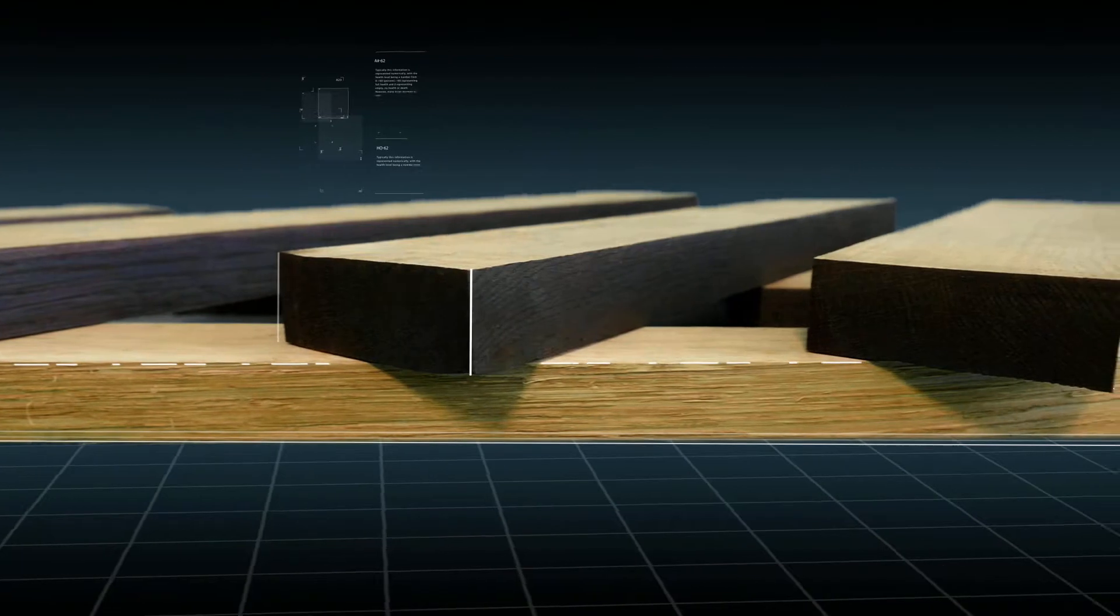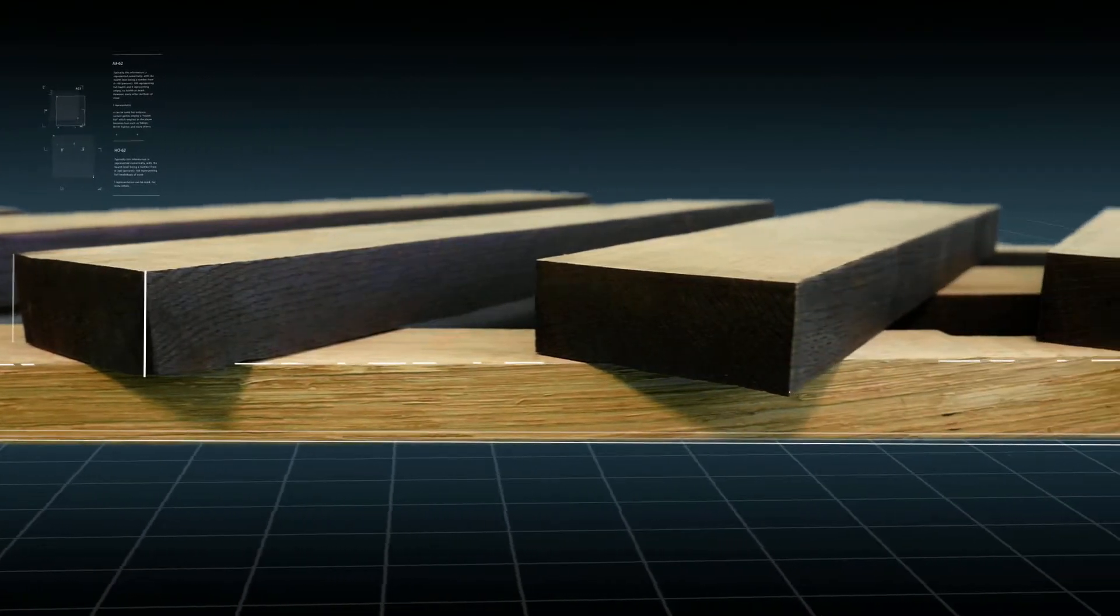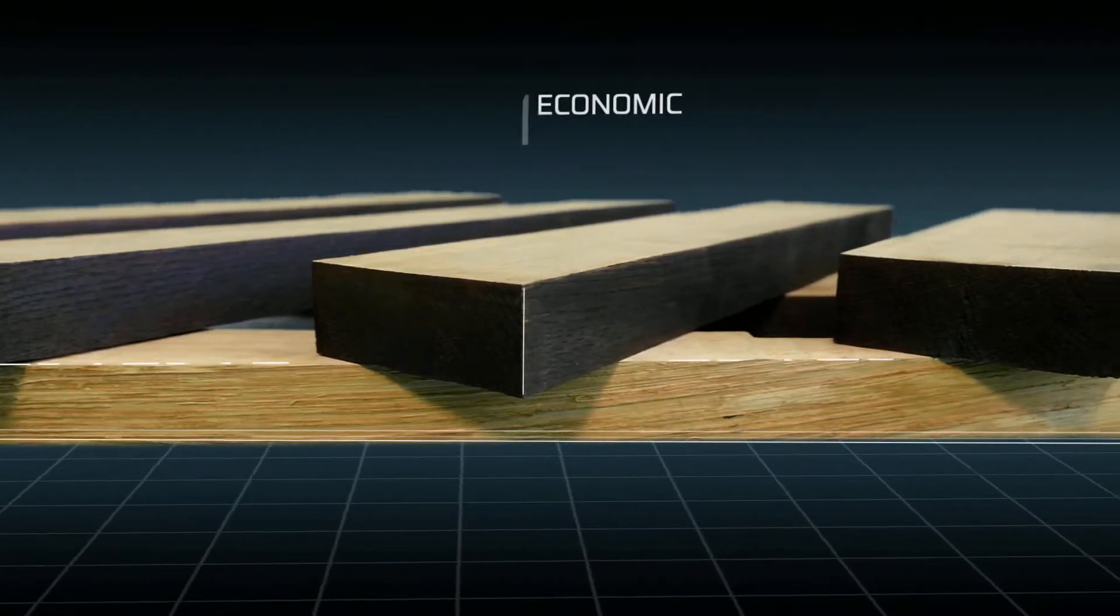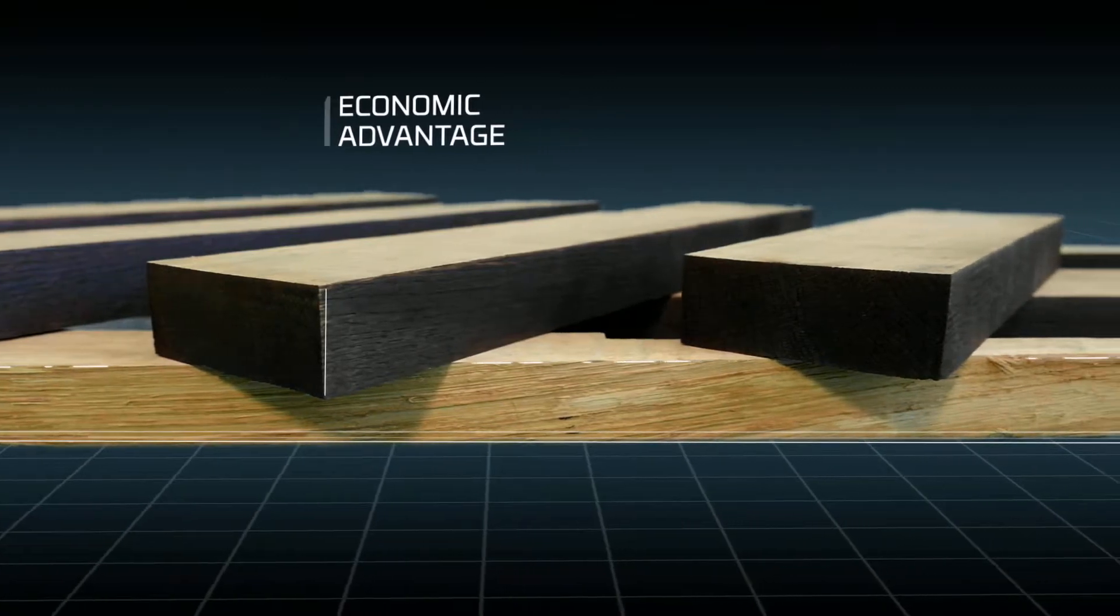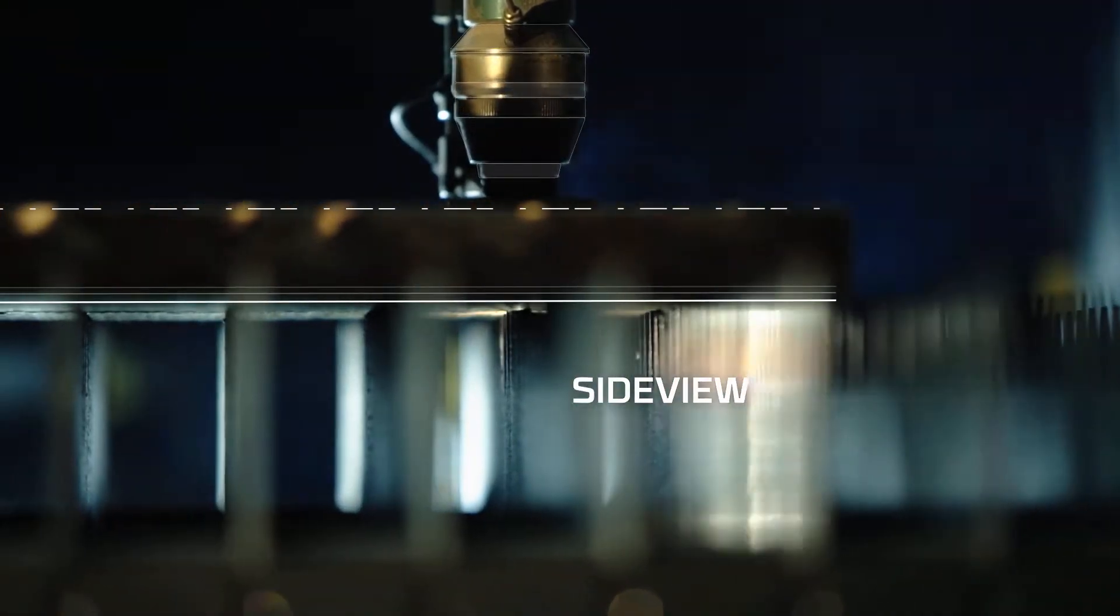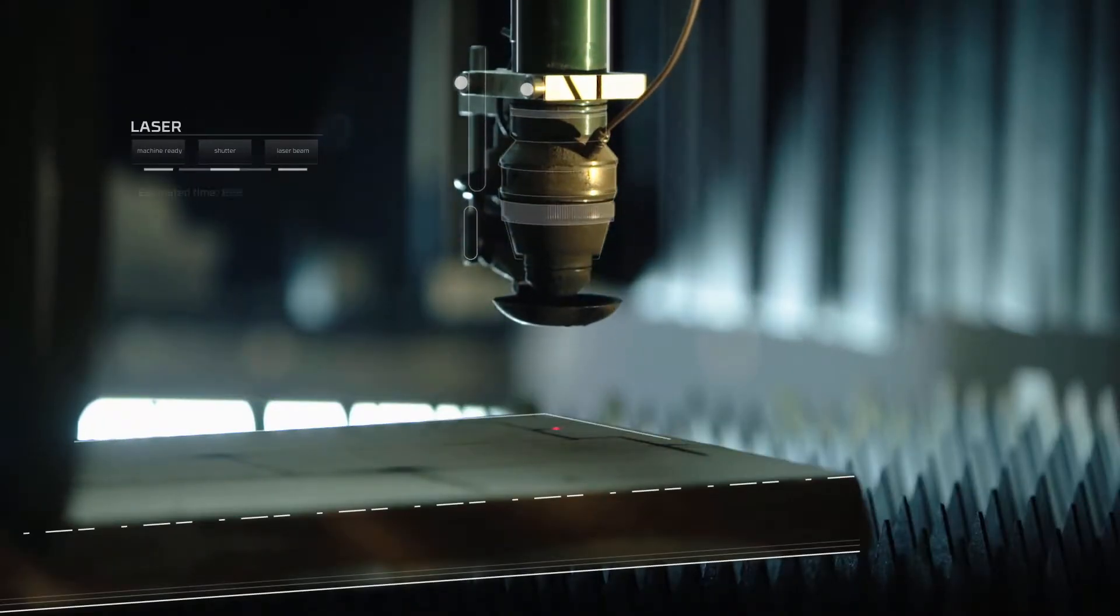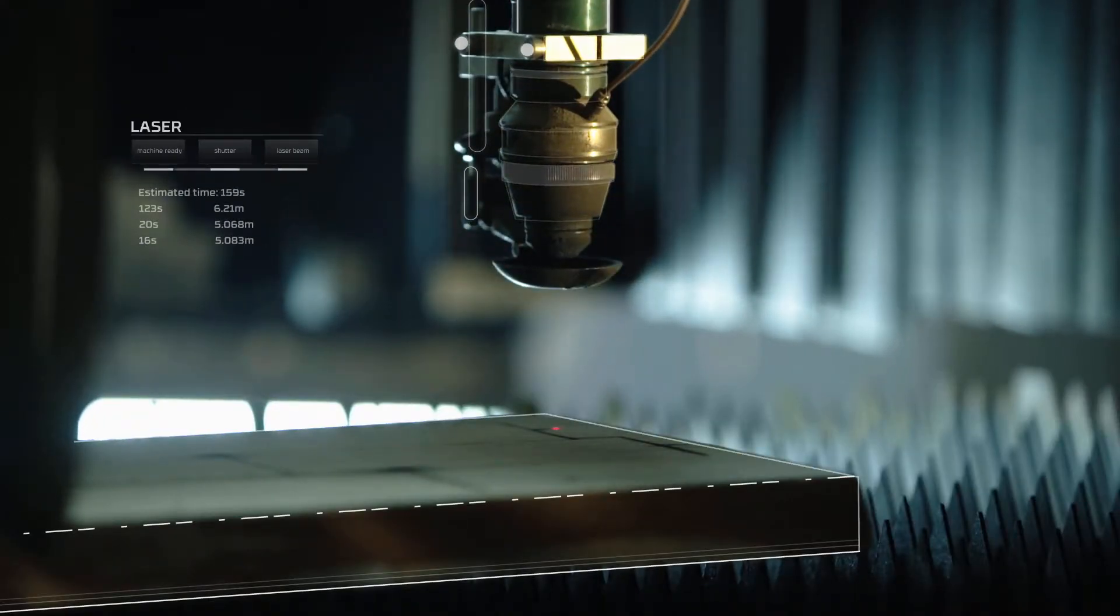When solid strips are produced, the edges need to be treated with a special coating, something which incurs additional labor and material costs. Laser singeing closes wood pores and eliminates any other treatment because there is no longer any end-cracking risk.